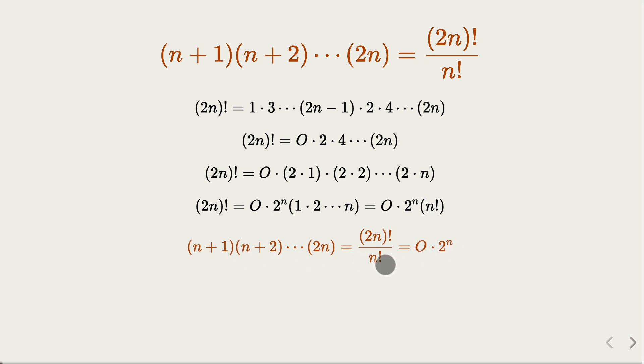So that quantity here is going to be 2 to the nth power times an odd number. So it is divisible by 2 to the n, but not by 2 to the n plus 1th power. That's the proof.